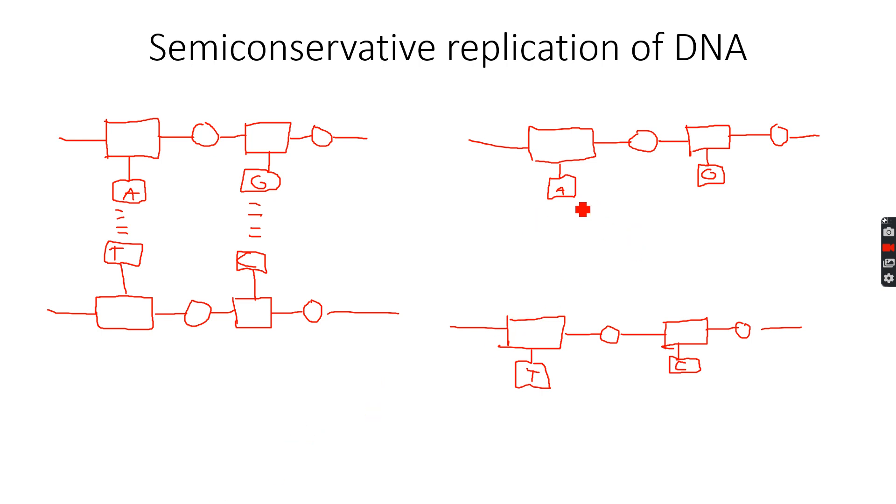Now what happens is that a new strand comes in for both—a new strand for this one and a new strand for the other one. So a new strand has come, and we have the T over here because A will always pair up with T, hydrogen bonds between them. We have the C over here because G will always pair up with C, hydrogen bonds between them. Similarly, a new strand comes over here.